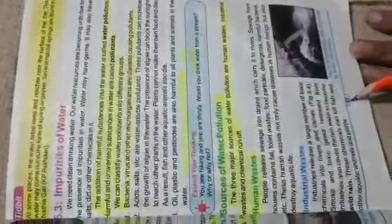People dig wells to bring groundwater to the surface, and we can use different types of groundwater. At page number 49, we have the impurities of water. We talked about sources of water, and now we have different types of impurities.